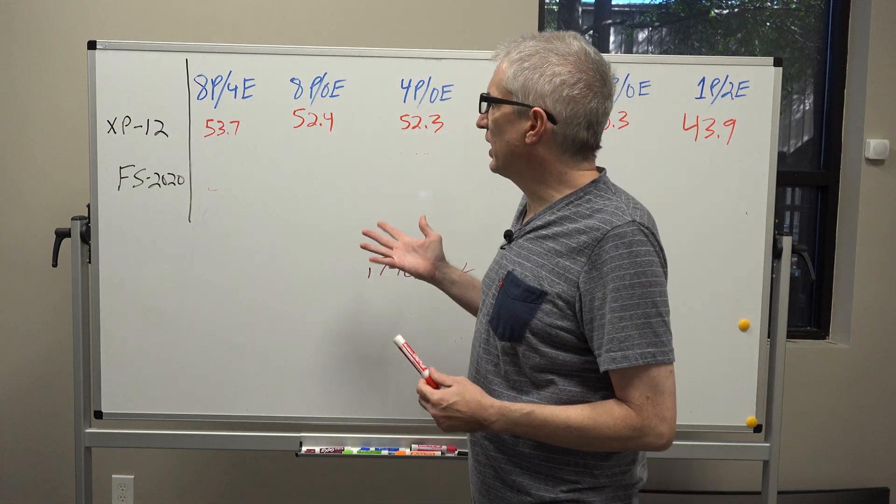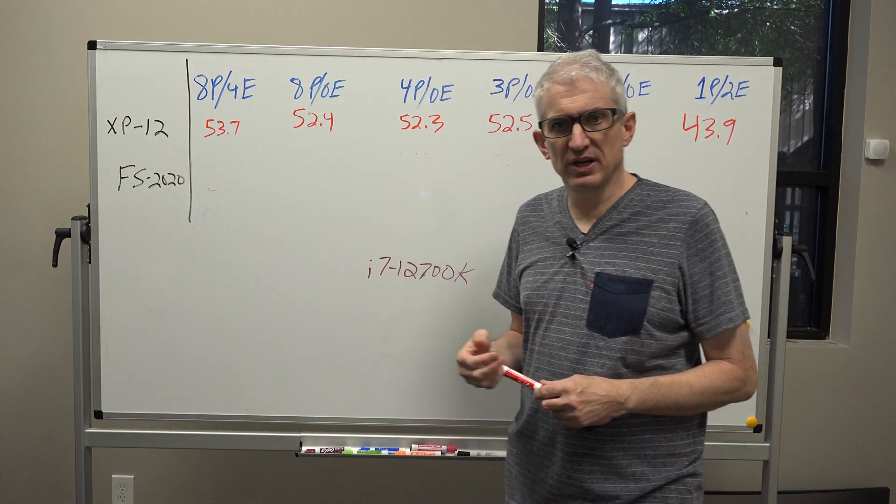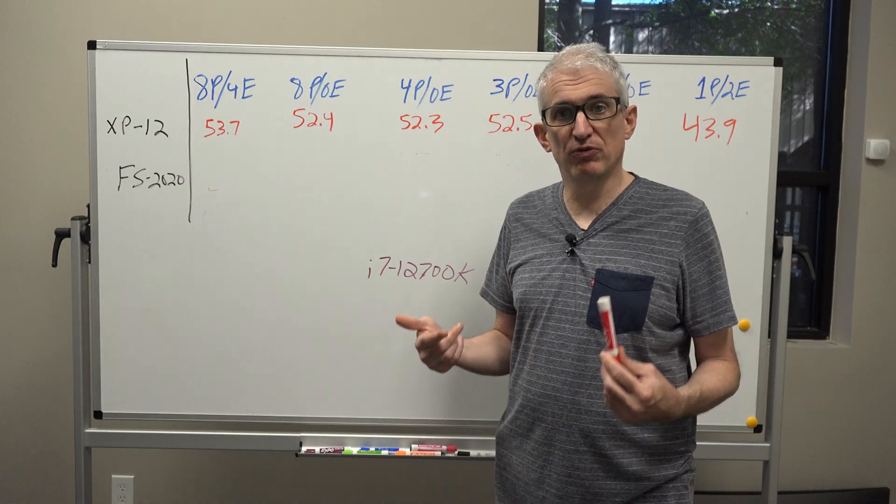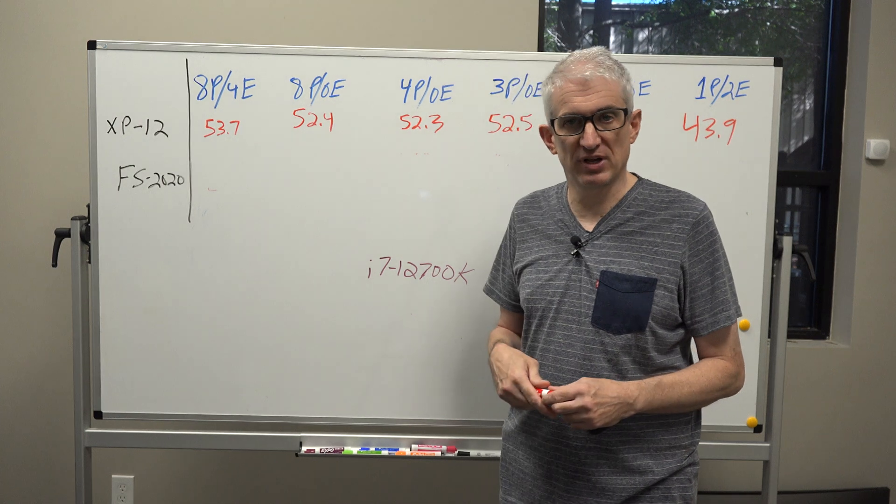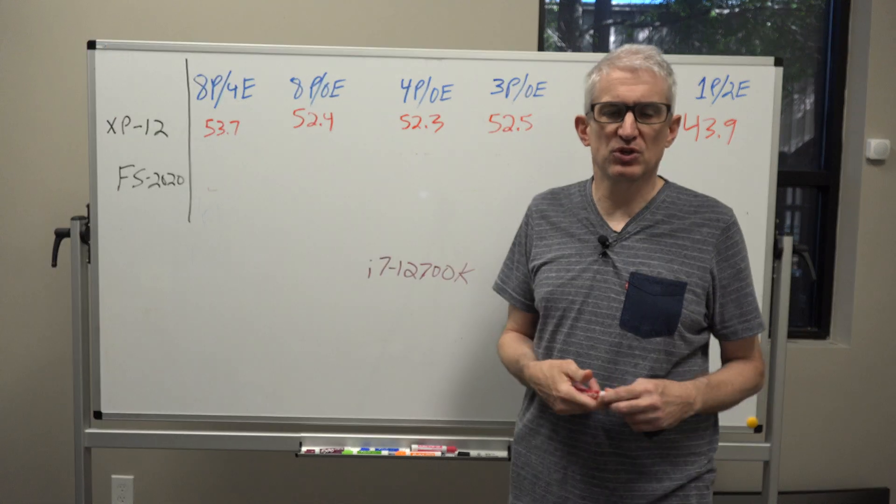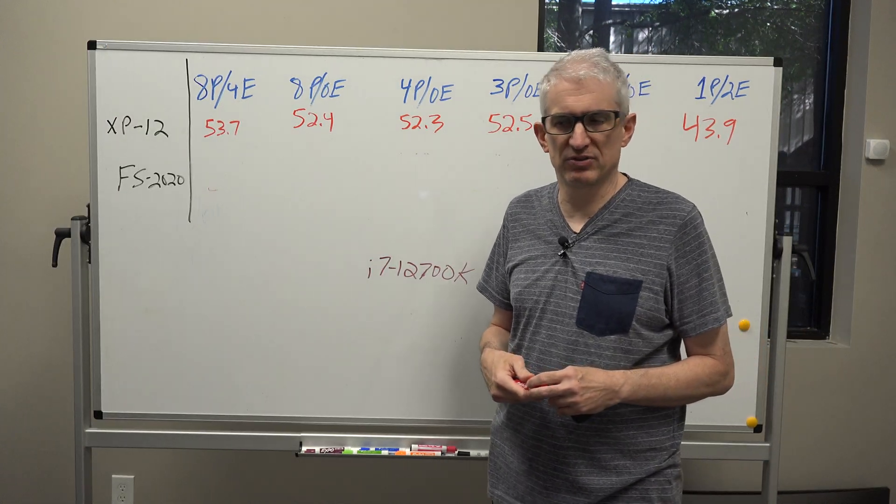So what I use is an i7-12700K which is an eight performance core, four efficiency core processor. The performance cores are used for the main processes and efficiency cores are used for background processes.